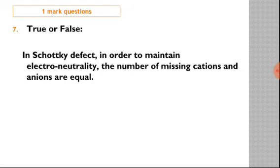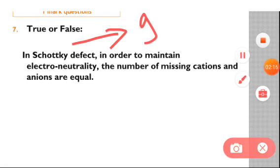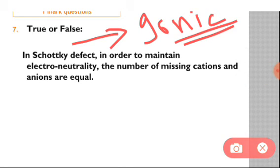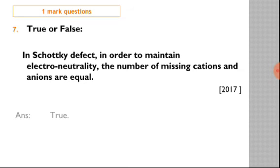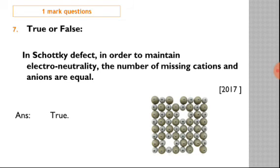Next is a true or false question. In Schottky defect, in order to maintain electroneutrality, the number of missing cations and anions are equal. This statement is true. In Schottky defect, to maintain electroneutrality, equal numbers of cations and anions are missing from the crystal structure. This ensures no net charge.